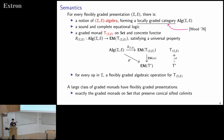Furthermore, every graded monad satisfying some colimit preservation condition — analogous to the finitary condition for presenting finitary monads — has a presentation in this sense. So we can present all graded monads that we care about. This is essentially an overview of the main results.